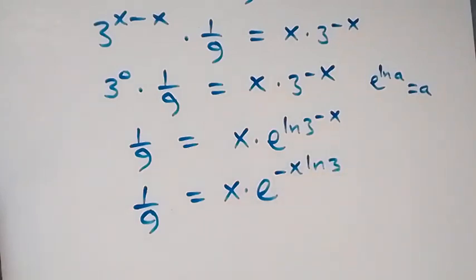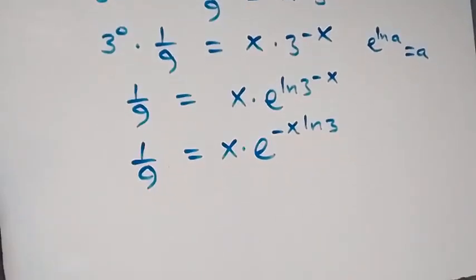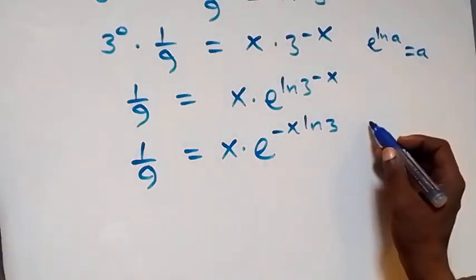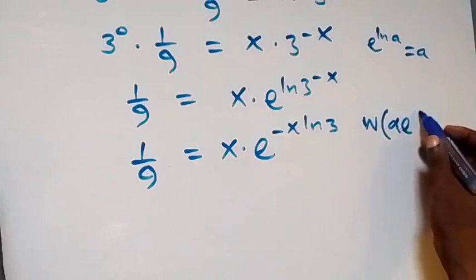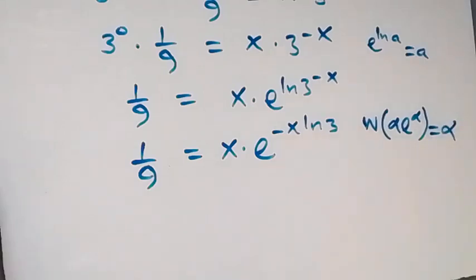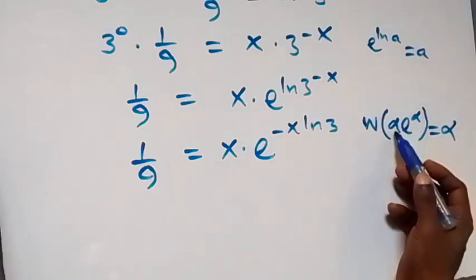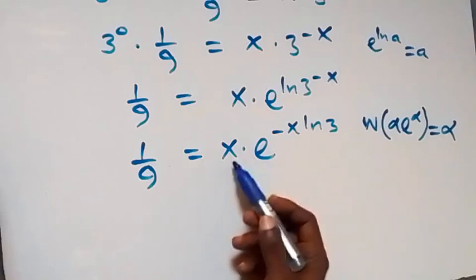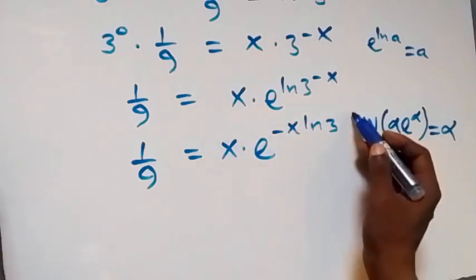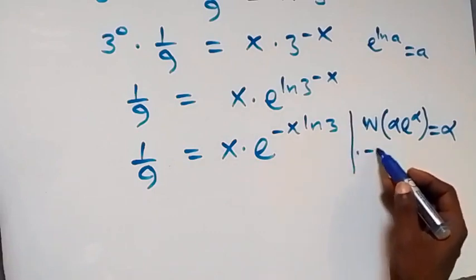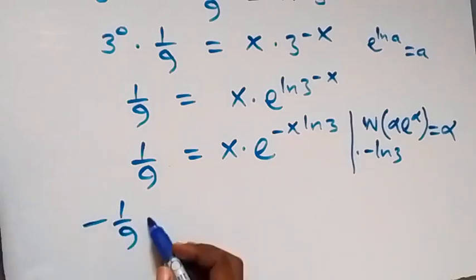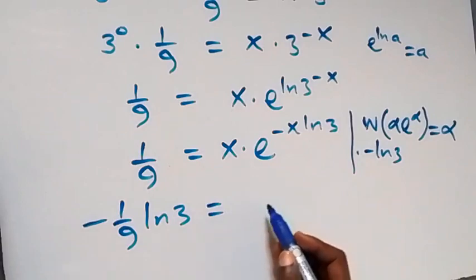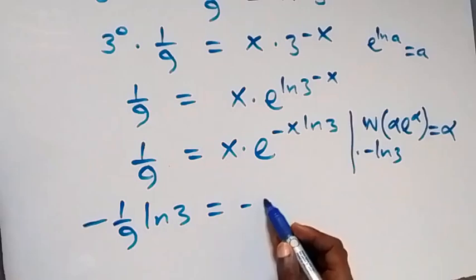If you are enjoying this class, give it a thumbs up and subscribe for more videos. Now we want to apply the Lambert W function, where W of alpha times e raised to power alpha equals alpha. To make the coefficient match the power, we multiply both sides by minus ln 3. This side becomes minus 1 over 9 times ln 3.